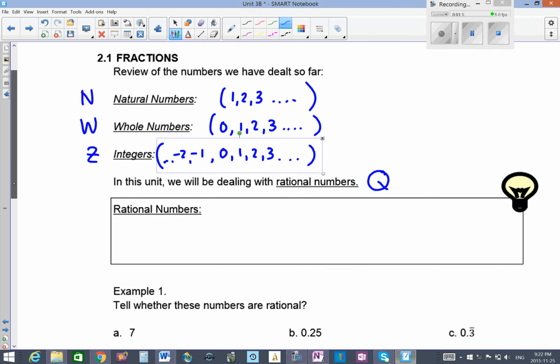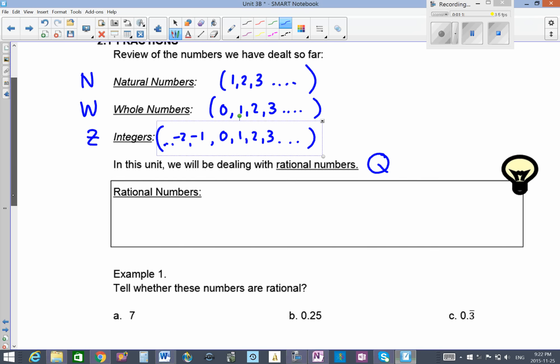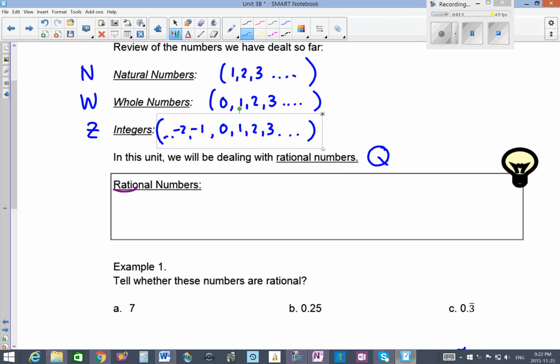Now let's define what a rational number is. I'm going to highlight the root word of the word rational, which means ratio. We know ratio, like 4 is to 1. An example of another ratio is 3 is to 4, like 3 boys in every 4 girls.